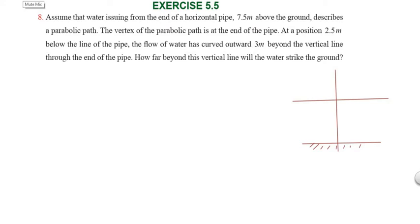Hi students, greetings from Sax Education Academics. This is Exercise 5.5, Question 8. Assume that water issuing from the end of a horizontal pipe 7.5 meters above the ground describes a parabolic path. The vertex of the parabolic path is at the end of the pipe. At a position 2.5 meters below the line of the pipe, the flow